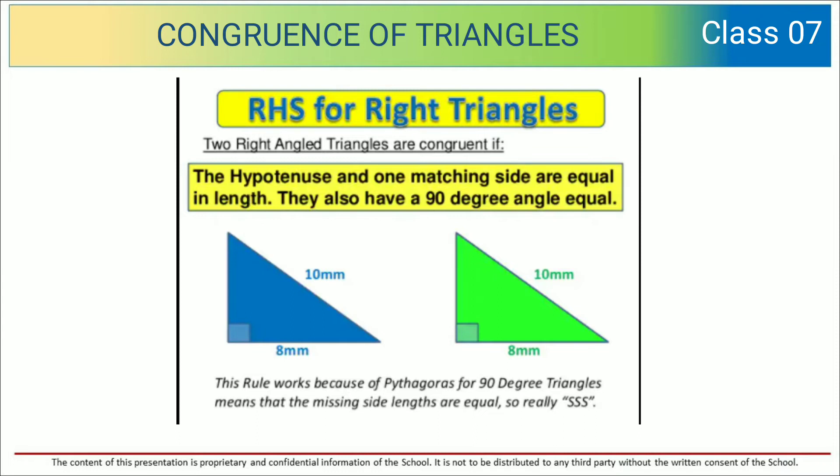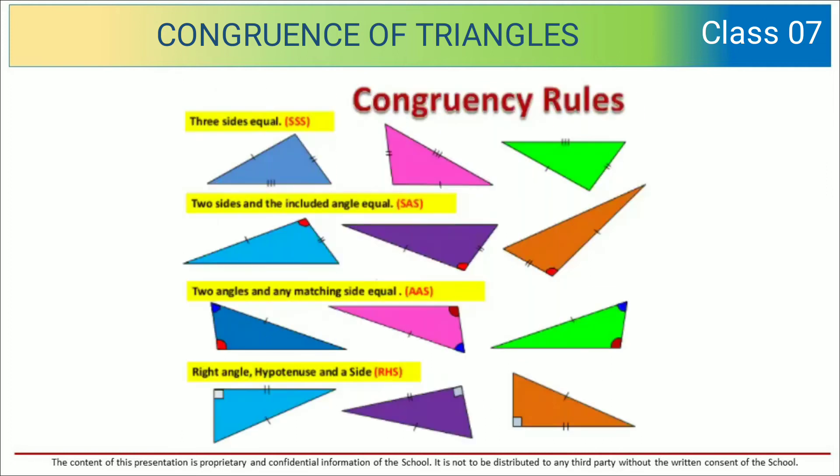So really SSS congruency rules. Three sides equal SSS. Two sides and included angle SAS. Two angles and any matching side equal AAS. Right angle hypotenuse and side RHS.